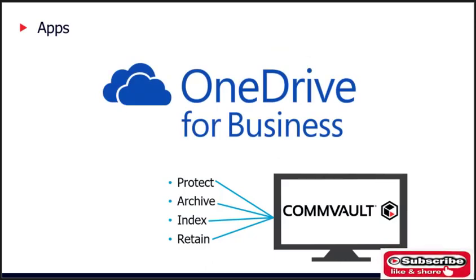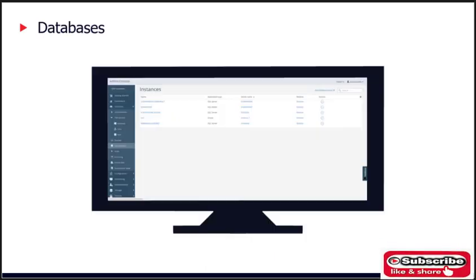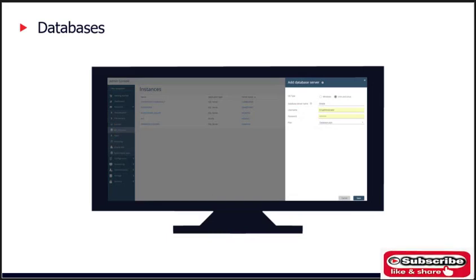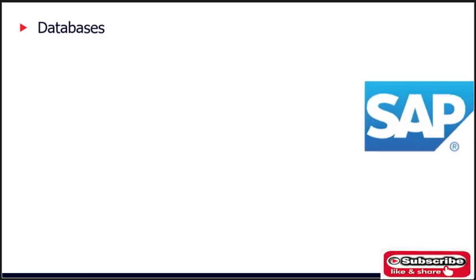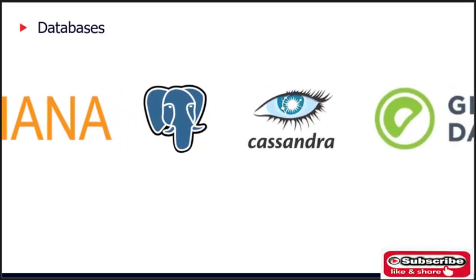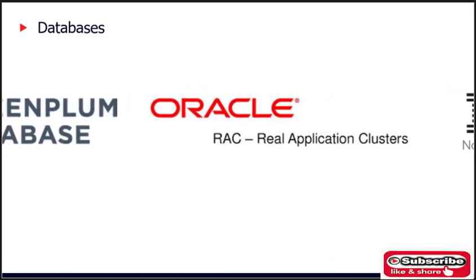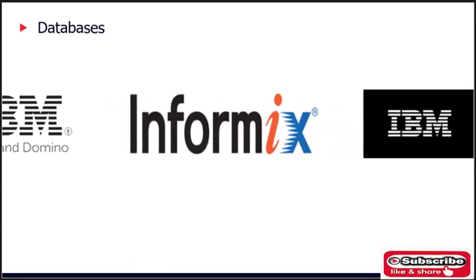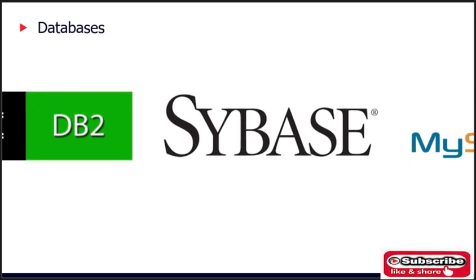Commvault can protect documents stored in Microsoft OneDrive for Business cloud storage, allowing customers to include the protection of OneDrive data as part of their regular data protection strategy. With Commvault complete backup and recovery, customers can quickly and efficiently protect their databases. They only need to answer a few questions before performing their first backup after completing the database instance setup. Commvault complete backup and recovery provides support for the vast majority of database environments available in the market today, with each server agent supporting specific features and integration points depending on the database type being protected.